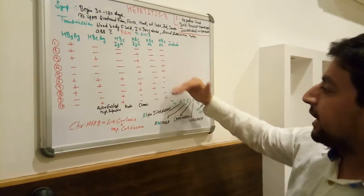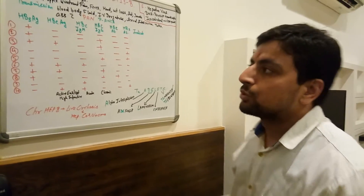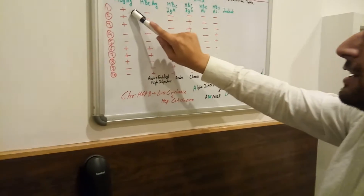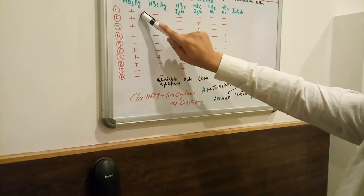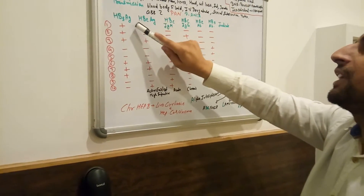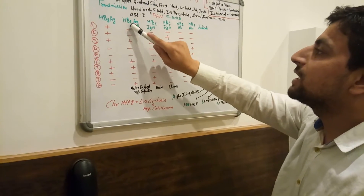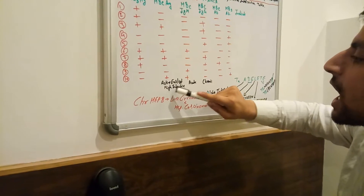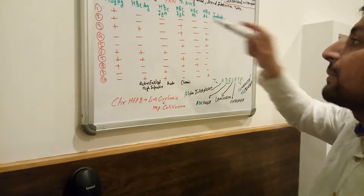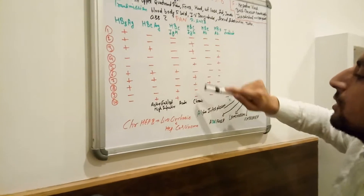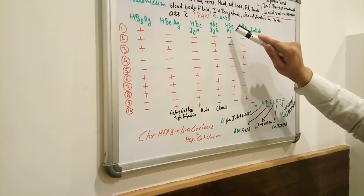Now I am going to explain something very important. Hepatitis B surface antigen (HBsAg) indicates infectivity. Hepatitis B e-antigen (HBeAg) indicates active, earliest, and highly infective status. Hepatitis B core antibody IgM indicates acute infection, while IgG indicates chronic infection.